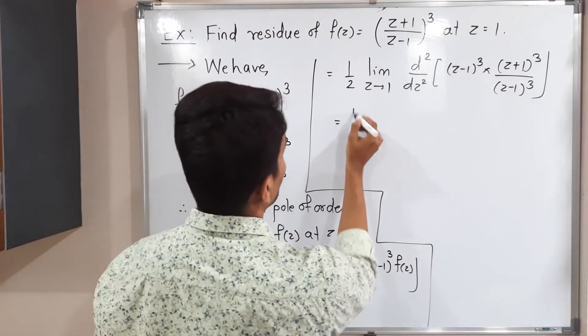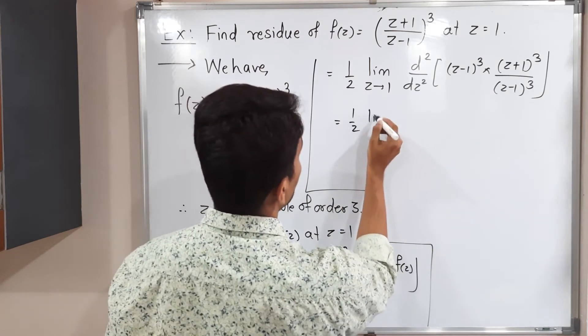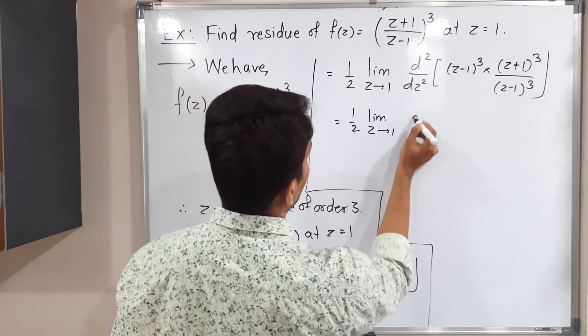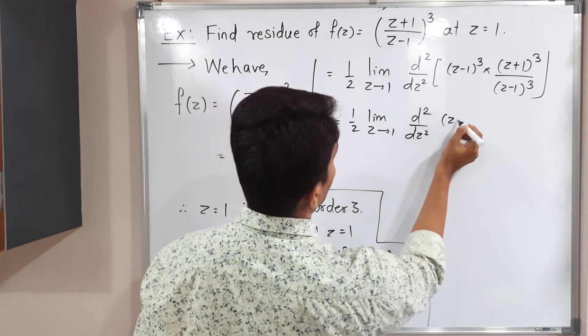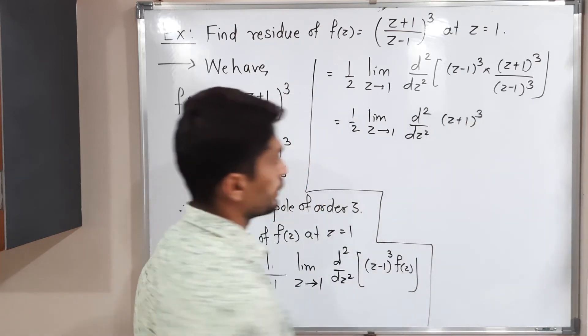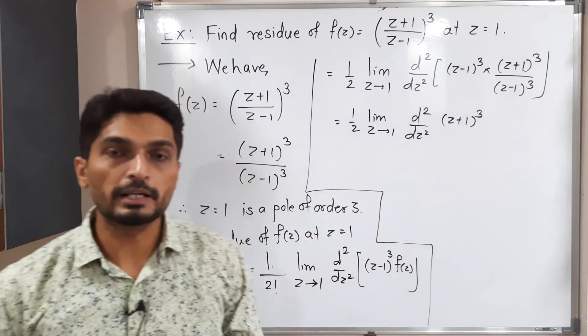So z plus 1 cube divided by z minus 1 cube. So z minus 1 cube will get cancelled. And inside the bracket, you will simply have z plus 1 cube. Double derivative of z plus 1 cube only.